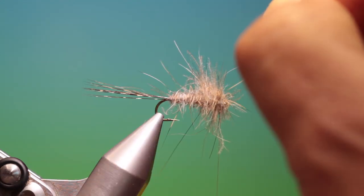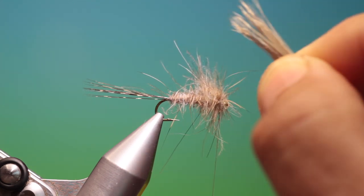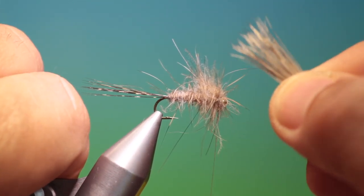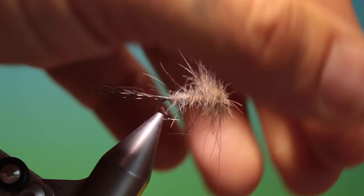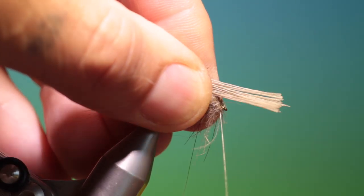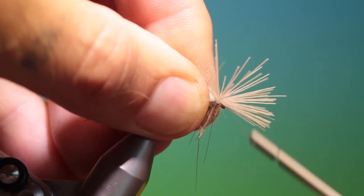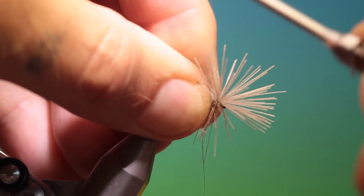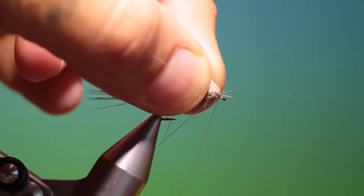Then we want a little bunch of deer hair. I haven't stacked this. All I've done is cleaned it. If you stack it, I think it kind of takes away from the scruffiness. So we'll just put this on. About the length of the body. I'll just tie this in. Lift that up.